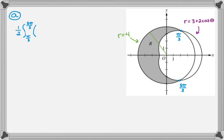You can see that the farther out curve is r equals four and then the closer curve on the entire interval is three plus two cosine theta. So it is going to be one half the integral from pi over three to five pi over three of four squared minus the quantity three plus two cosine of theta squared and then d theta.